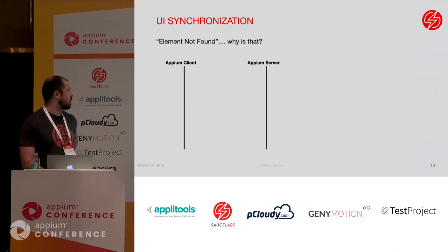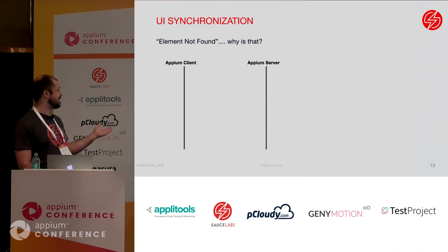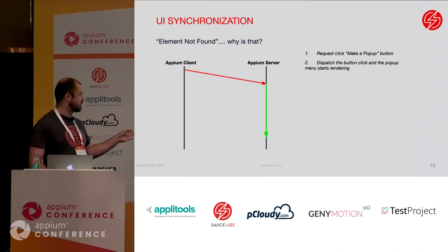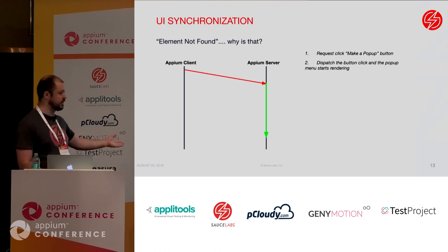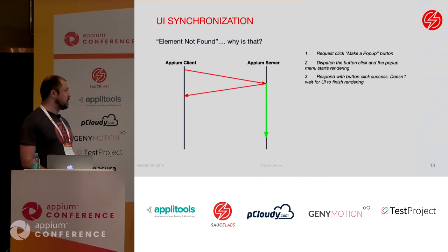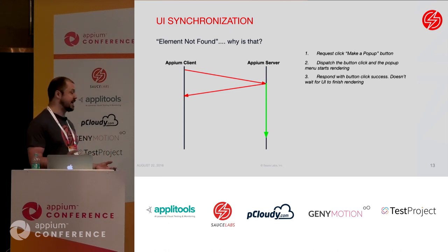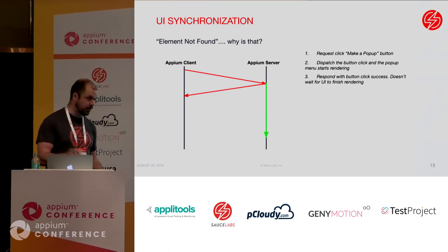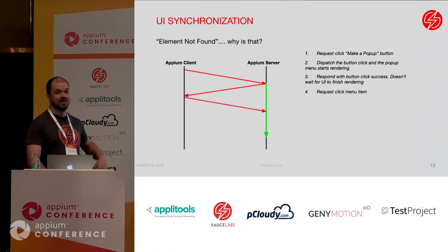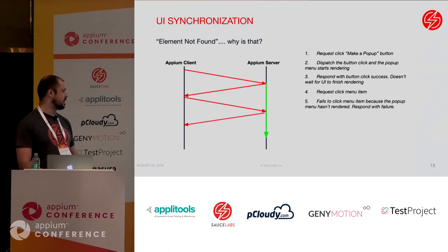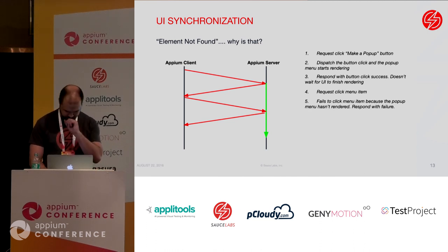To demonstrate what happened, let's look at this HTTP network chart. We requested to click the 'make a pop-up' button, dispatched the button click, and the pop-up menu starts rendering — the duration is represented by the green line. We respond with the button click success. We didn't wait for the UI to finish rendering because UI Automator just knows the button was clicked and responds with success. Then we request to click on the menu item, but it's not done rendering yet, so it responds with a failure — element not found error.